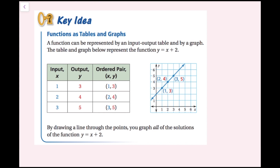Functions as tables and graphs. A function can be represented by an input-output table and by a graph. The table and graph below represent the function y equals x plus 2. We have our inputs, our outputs, and this table also includes the corresponding ordered pair, which is just input comma output. This graph is a line that has all the points in the equation y equals x plus 2. By drawing a line through the points, you graph all of the solutions of the function y equals x plus 2.